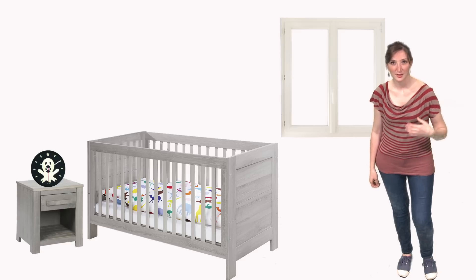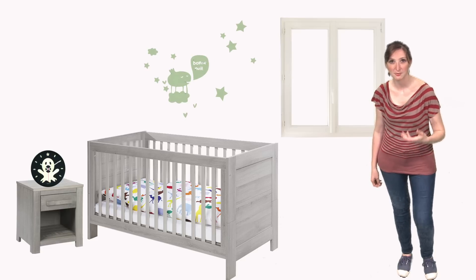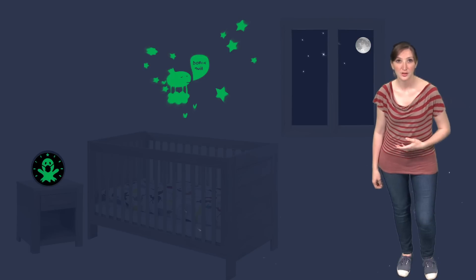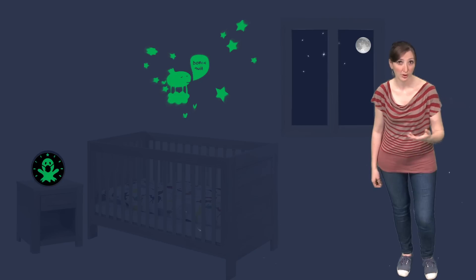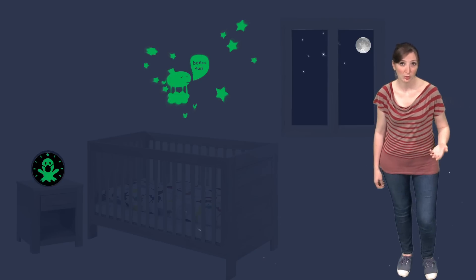Phosphorescence is, for instance, the stickers that we put in children's bedrooms and that continue to diffuse a greenish light in the dark, or a watch or clock hands which remain visible in the dark.